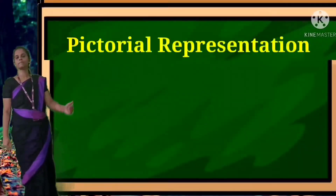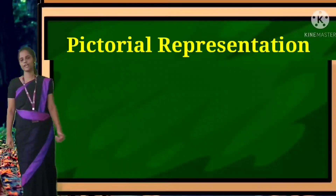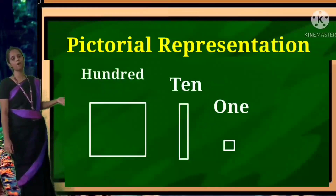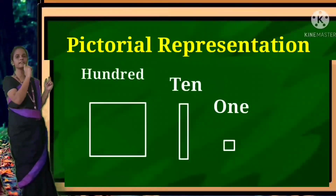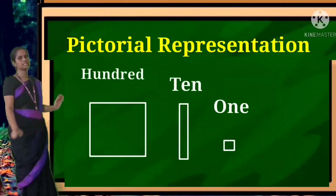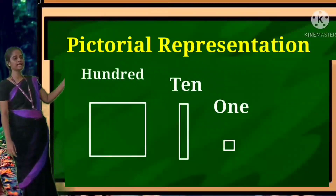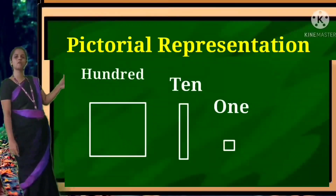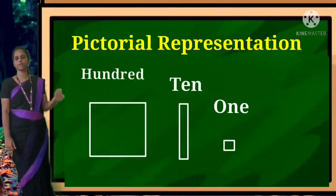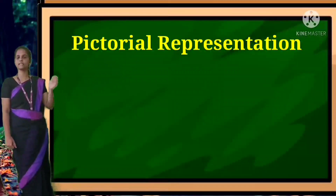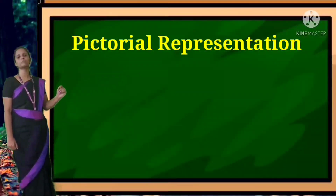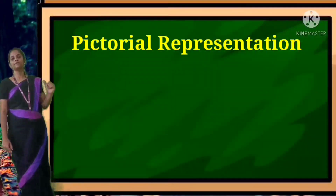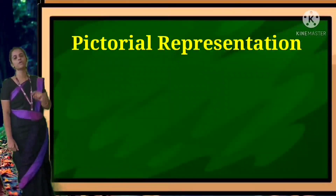The next topic we are going to see is pictorial representation. This big box denotes one hundred. This thin strip denotes one ten. This small box denotes one one. Pictorial representation means we will give you the boxes and you have to write the numbers.